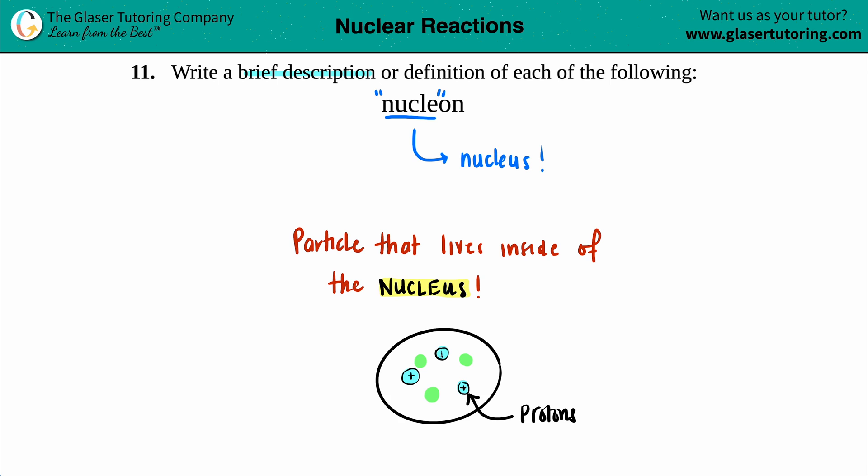And then the green ones. What's the other particle that exists inside of the nucleus? Yeah, the neutron. So those are your two specific nucleons. So general is that they're just particles, but the two particles that you can say that's inside the nucleus is a proton and a neutron.